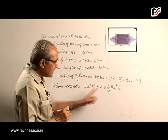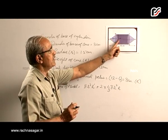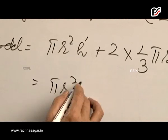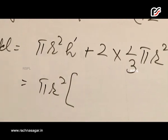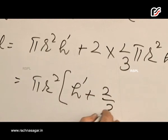Now, from here r is same in both the cases because diameter is same for both cone and cylinder. So from here πr² we take common. We are left with h dash plus 2/3 h.